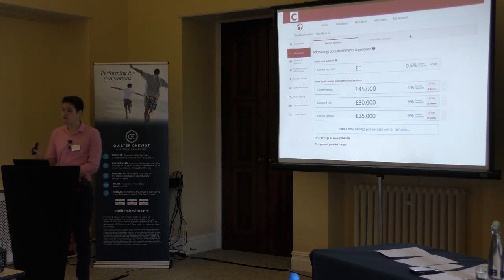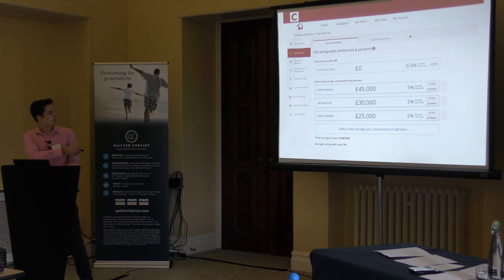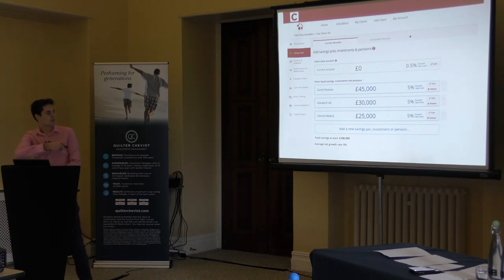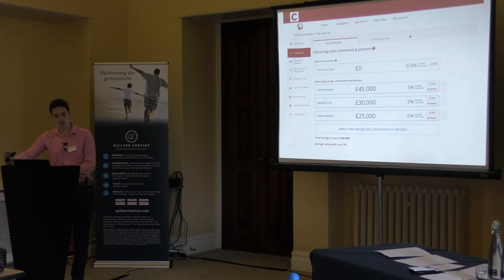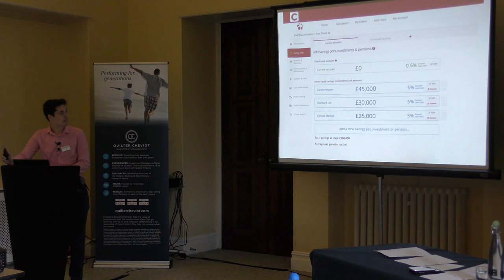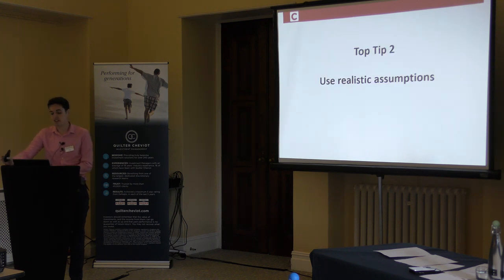What we're looking at here are those various DC pots — we can see he's got one from Zurich worth £45,000, one from Standard Life, and one from Clerical Medical. We've got a 5% growth rate on all of these pots — that's 2.5% after inflation, with a 2.5% inflation assumption as well. That brings me on to my second top tip: use realistic assumptions.